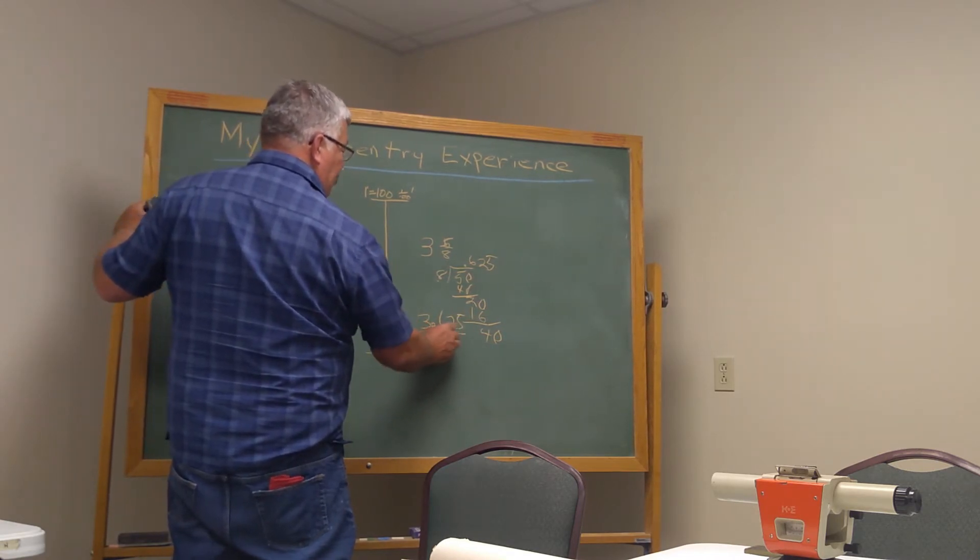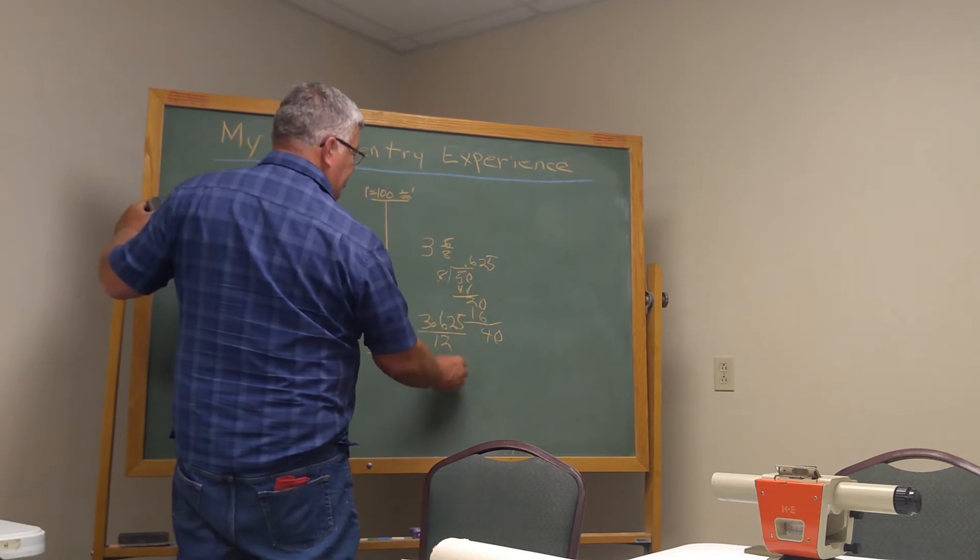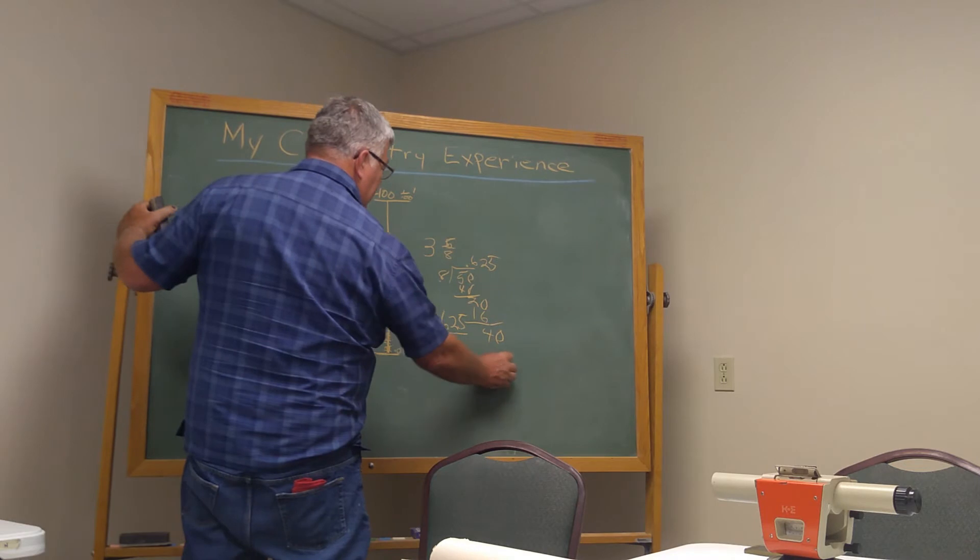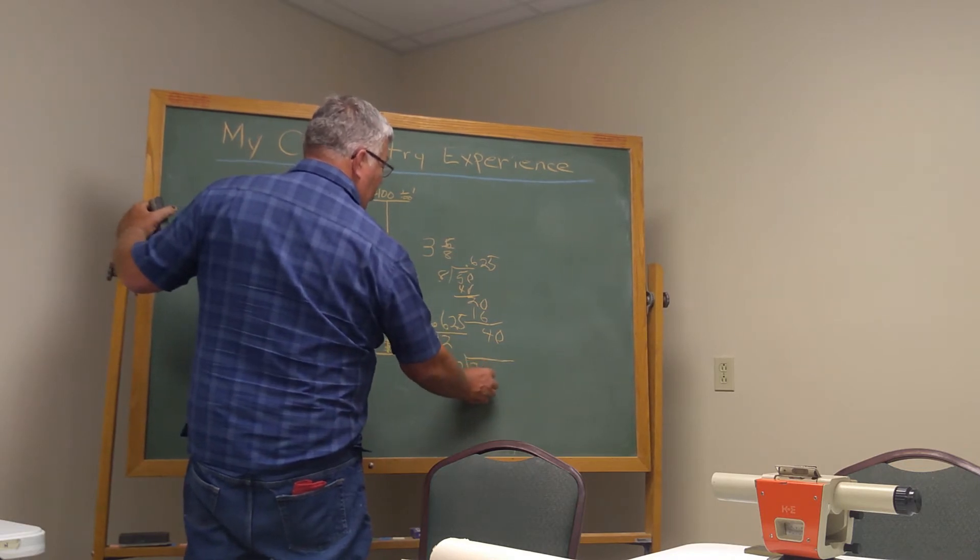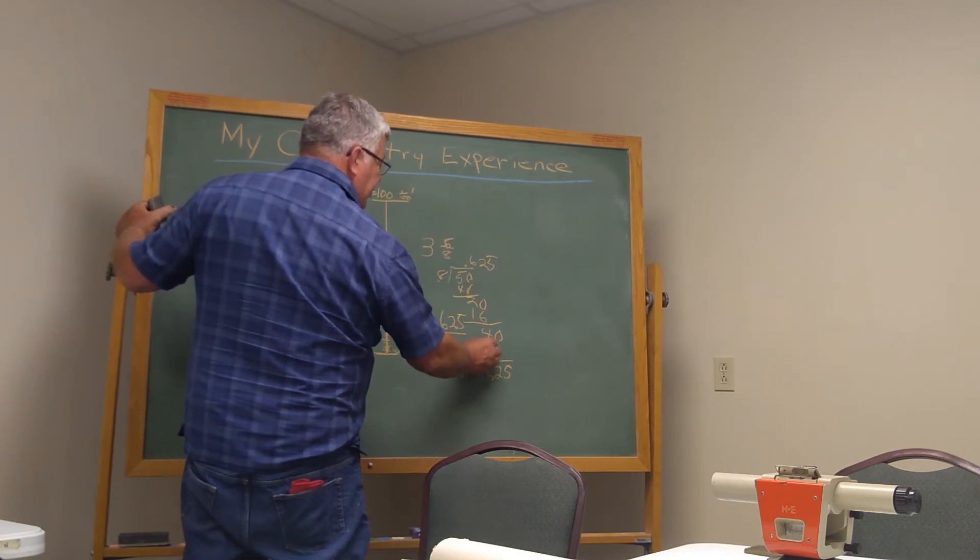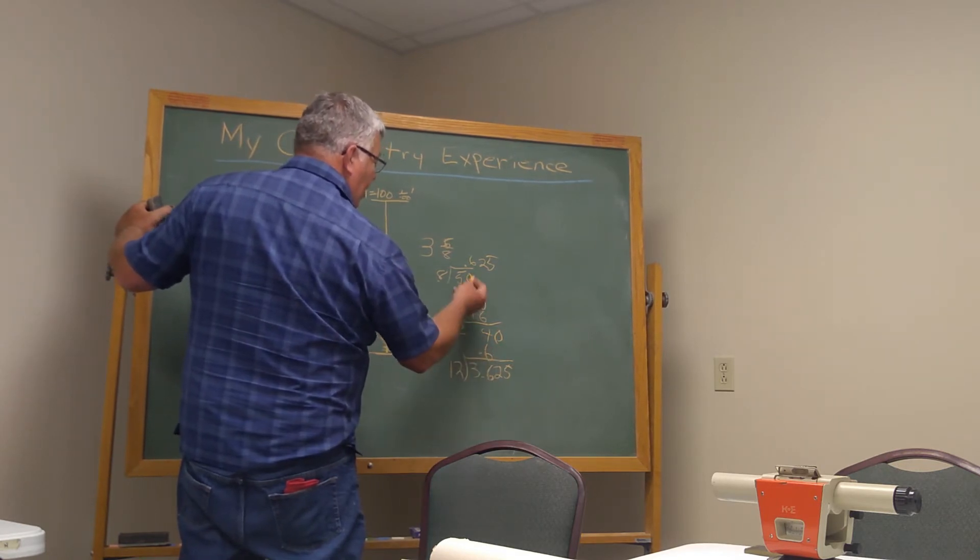So, we would have three point six to five inches. Now, we divide that by twelve to get one hundredths. Twelve into three point six to five. Twelve into thirty-six is six.